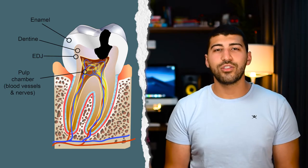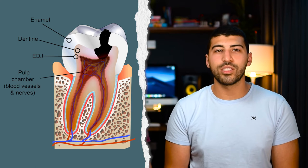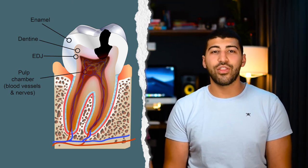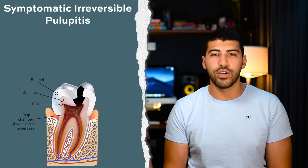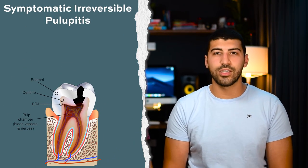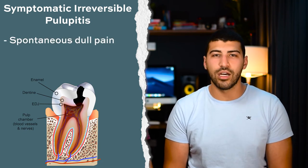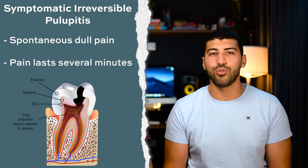If the caries isn't treated it will approach the pulp and cause it to become chronically inflamed. At this stage it's called symptomatic irreversible pulpitis, with symptoms of a spontaneous dull and prolonged pain that lasts several minutes.